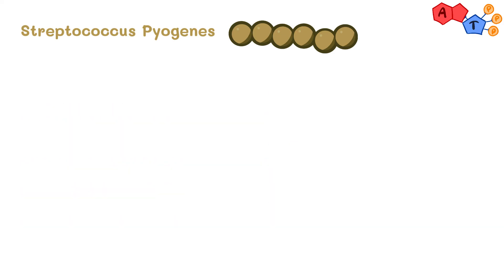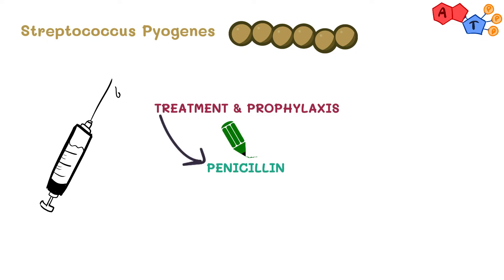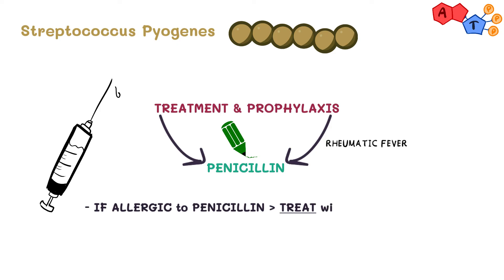For the treatment and prophylaxis of Streptococcus pyogenes, penicillin can be used to treat it and also as prophylaxis in cases of rheumatic fever. For those with penicillin allergy, macrolides can be used as an alternative treatment. Of course there are more details, but we wanted to keep it short and simple.